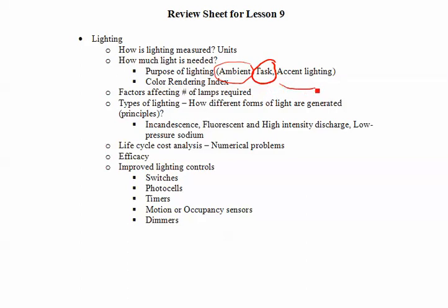Accent lighting is the lighting used to highlight certain things at home. For example, a painting or a statue — if you want to highlight that, that is accent lighting. You should be able to design lighting for certain areas.